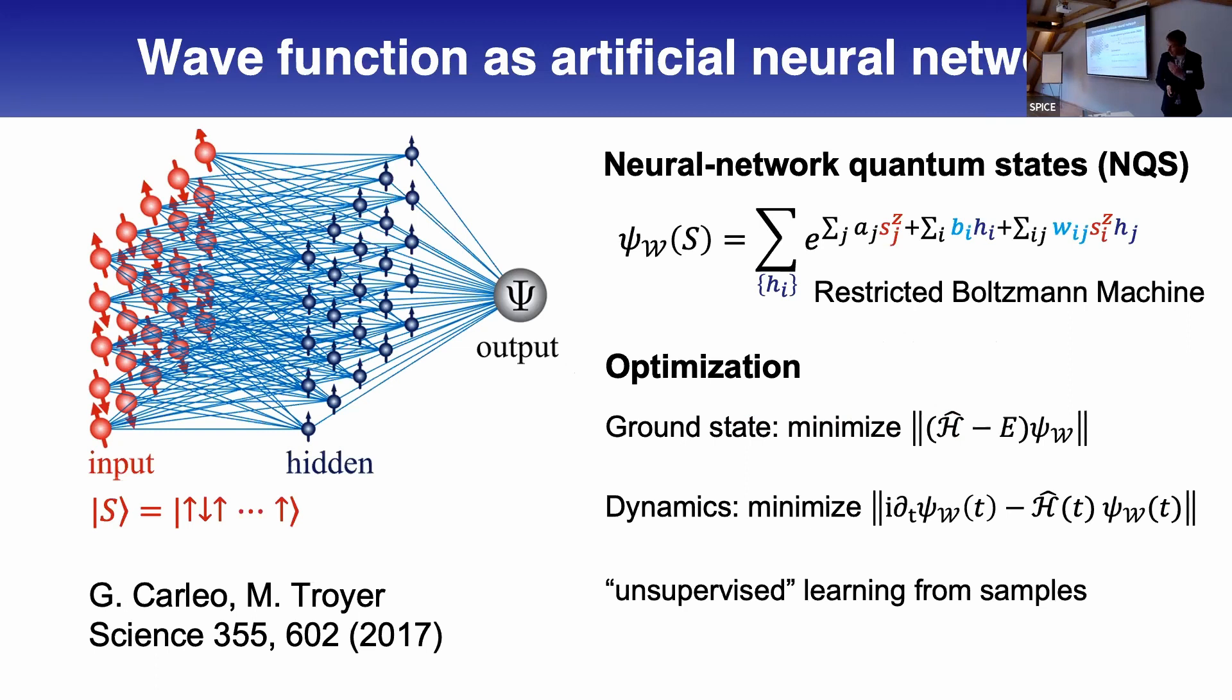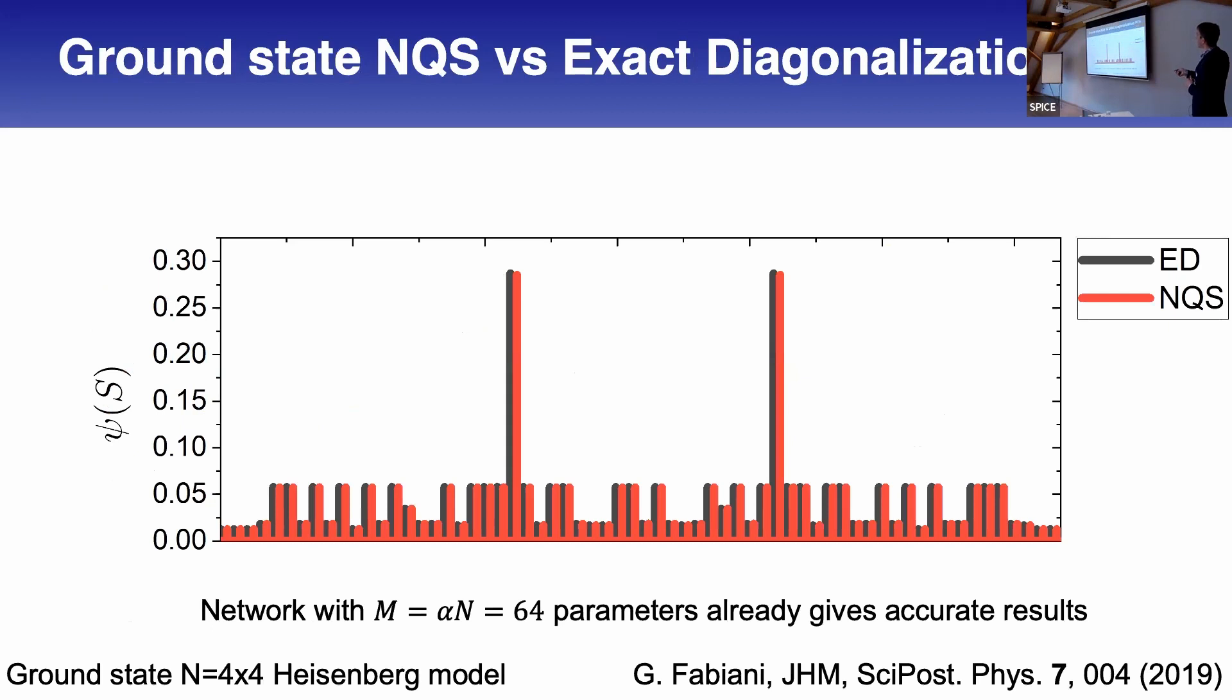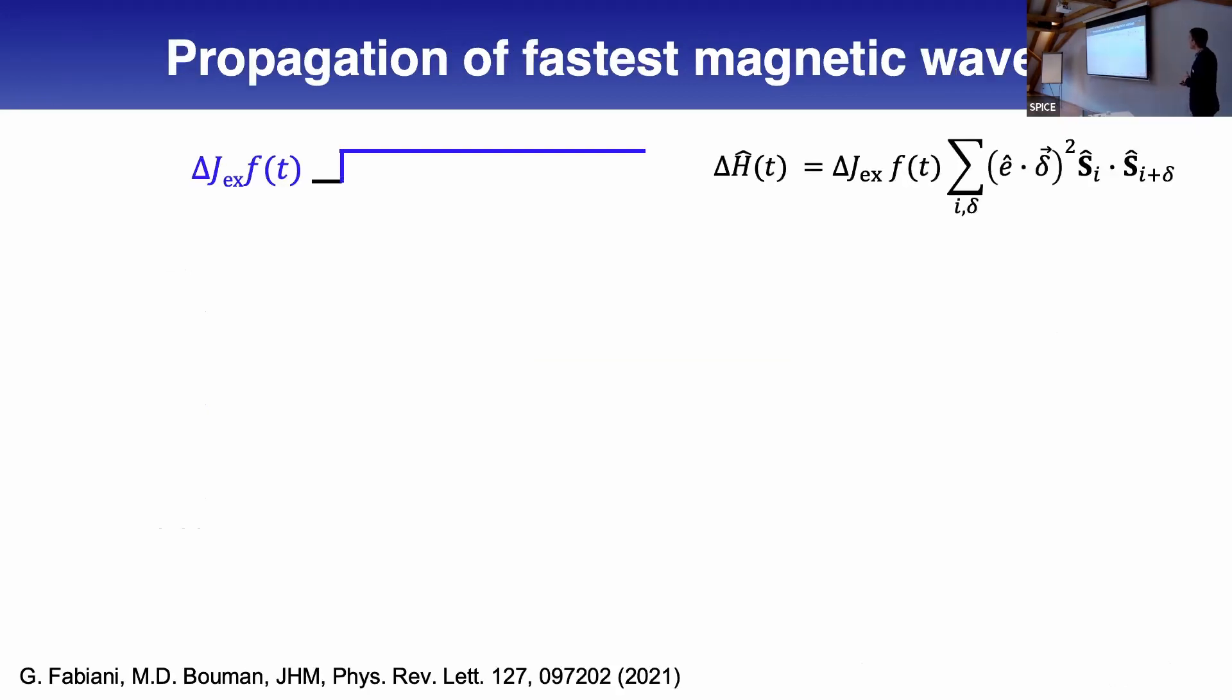These states were called neural network quantum states. From a physics point of view, this is a very smart and universal variational wave function. You can optimize it in the standard way using time-dependent variational principle. To show this works, I show the ground state. We train it, optimize it in the variational sense, and get very good accuracy, in this case for the amplitudes. For this square lattice Heisenberg model, it works very well.